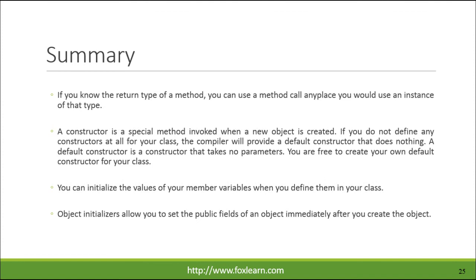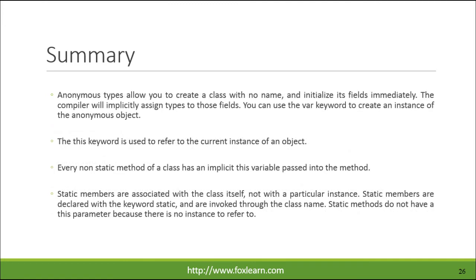If you know the return type of a method, you can use a method call any place you would use an instance of that type. A constructor is a special method invoked when a new object is created. If you do not define any constructors at all for your class, the compiler will provide a default constructor that does nothing. A default constructor is a constructor that takes no parameters. You are free to create your own default constructor. You can initialize the values of your member variables when you define them in your class. Object initializers allow you to set the public fields of an object immediately after you create it. Anonymous types allow you to create a class with no name and initialize its fields immediately. The compiler will implicitly assign types to those fields. You can use the var keyword to create an instance of the anonymous object.